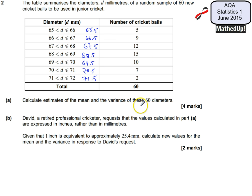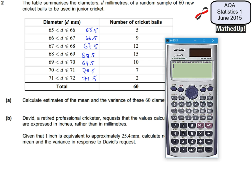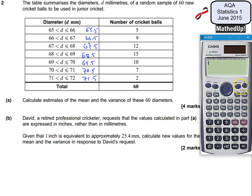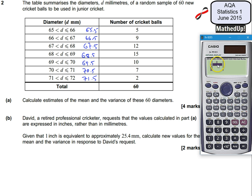To work out the mean I would do 65.5 times 5, 66.5 times 9, and so on, then sum all those together. But there's an easy way — I can use my calculator to calculate the mean for me, and I'll also use it to work out the variance. So I'm going to press mode and 2 to put me into stats mode, and we want the first option which is the variance option, so I'll press number 1. That gives me an opportunity to put values into a table.